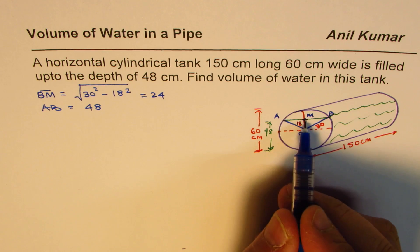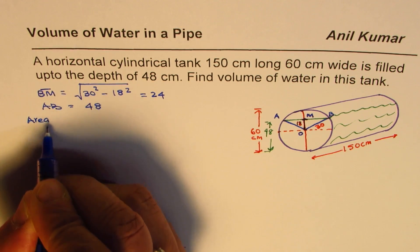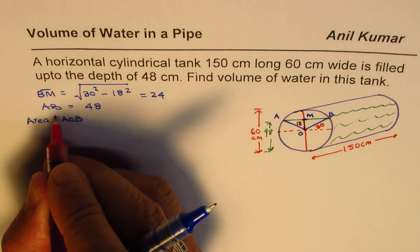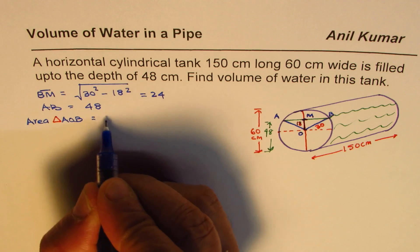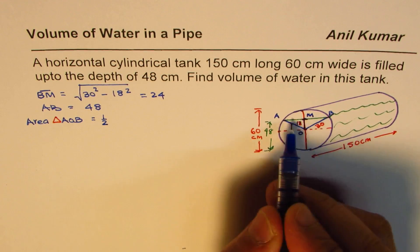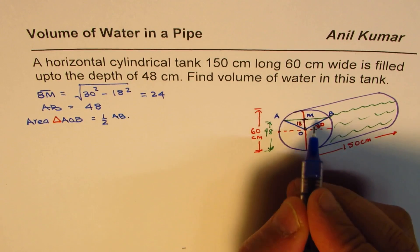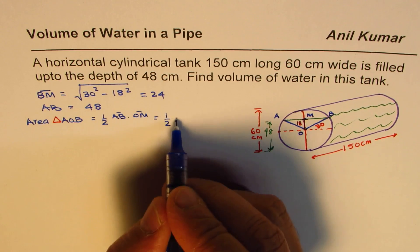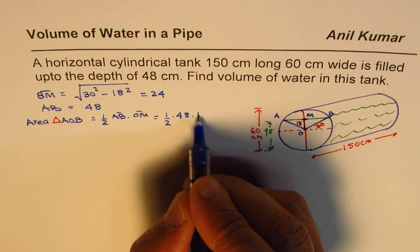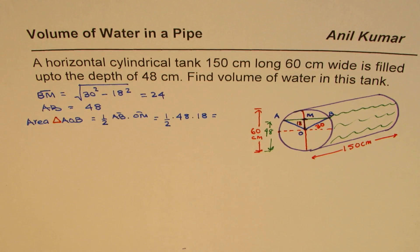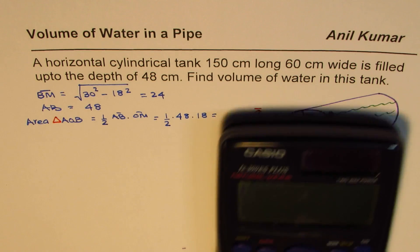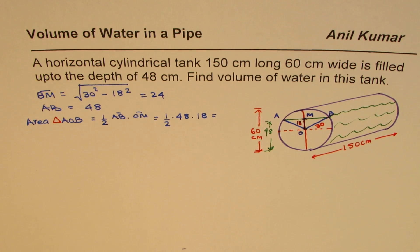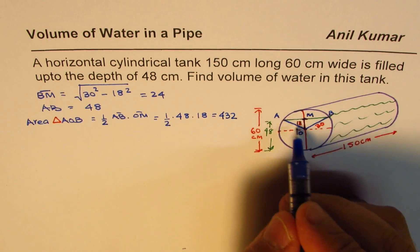So we know the base of the triangle and the height. Area of triangle AOB equals half of base AB times height OM. That is half of 48 times 18. We can calculate 48 times 18 divided by 2, which equals 432. So the area of the triangle is 432 cm².